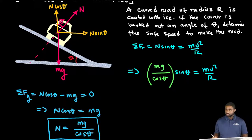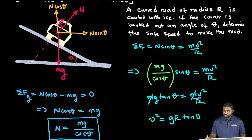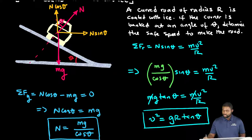So mg tan theta will be equal to mv squared all divided by R. The m's will cancel. So this would mean that v squared is equal to gR tan theta.